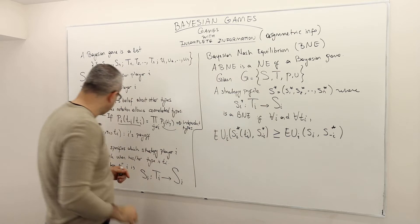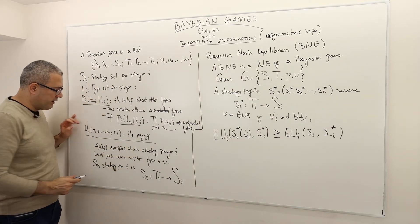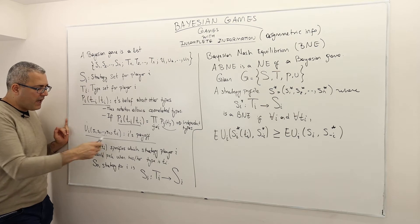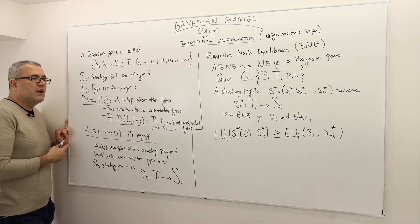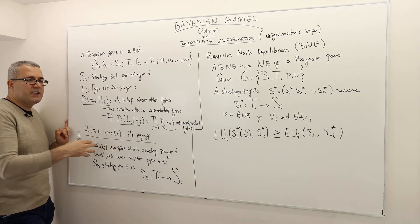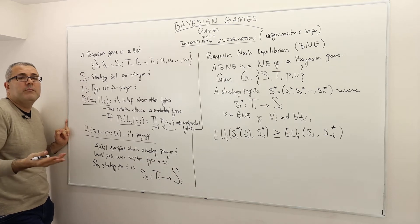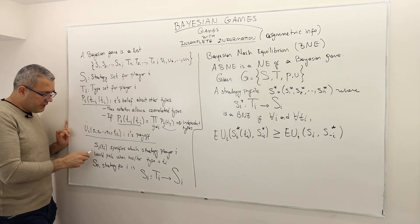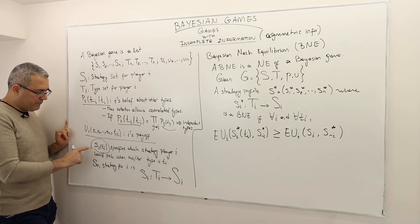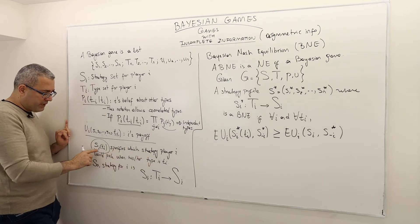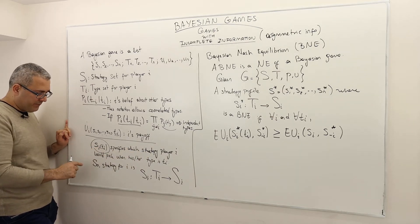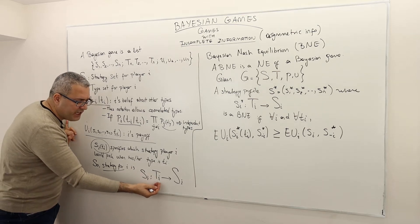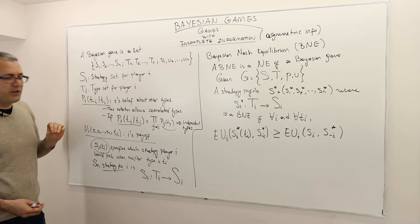The payoff function for player I depends on the strategies of all the players, because that is the essence of a strategic environment. It also depends on the type of player I. The strategy is important — it is a function Si(Ti), which specifies what strategy player I would pick if he is type Ti. So you can think of the strategy of player I as a function which maps each Ti to some strategy in the set of strategies Si.